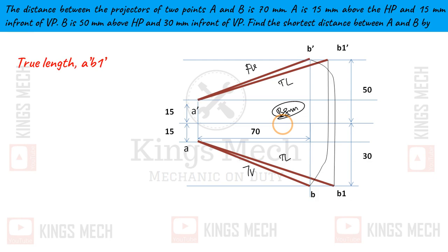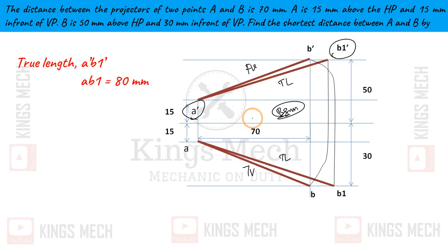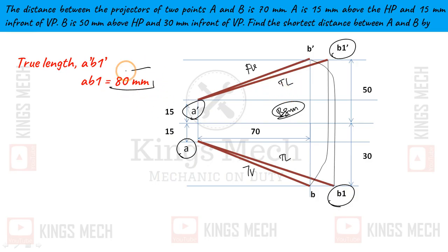So the answer is given. The true length is A dash to B1 dash, and that true length is 80 mm. That is the exact answer.